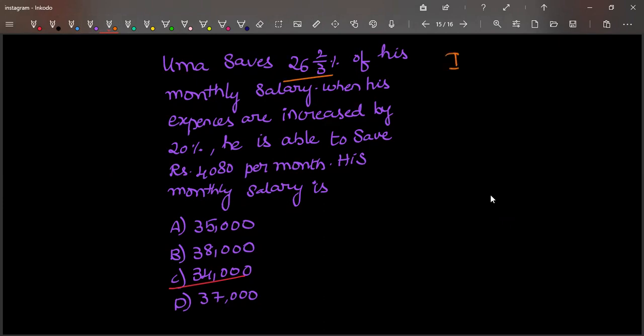We know that income is equal to expenditure plus savings. So if income is 100 percent, if Uma is saving 26 2/3 percent, the remaining was his expenditure. So his expenditure was how much? 100 minus 26 is 74, 74 minus 2/3, 73 1/3. So this was his expenditure.